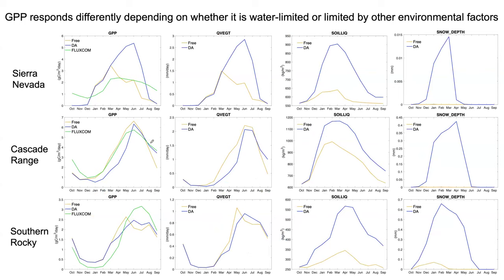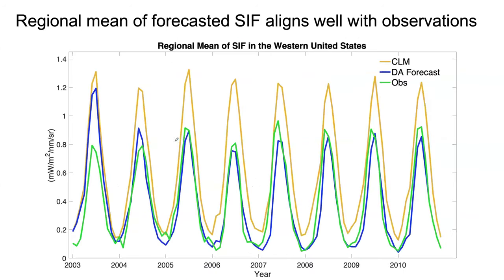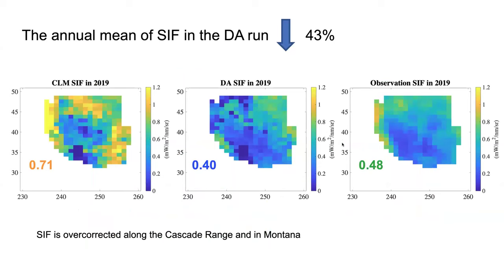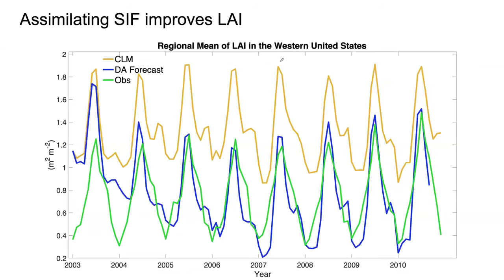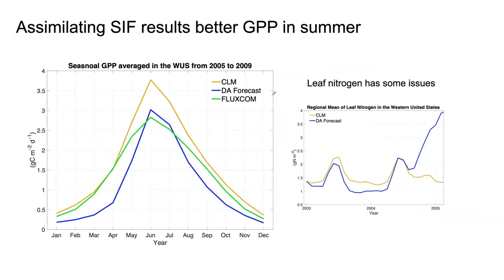For SIF assimilation, this is the time series of SIF over this region, and we can see it does a very good job. In terms of the annual mean, it is decreased by 43 percent. The SIF data assimilation also improves the leaf area index in this region, and we found that GPP can be improved in summer by tuning leaf nitrogen in the SIF assimilation.